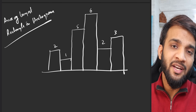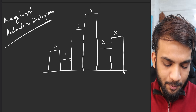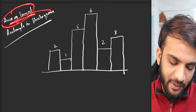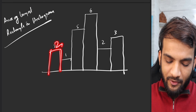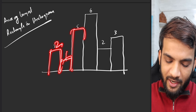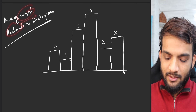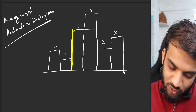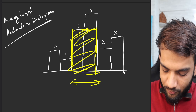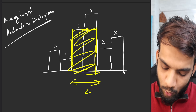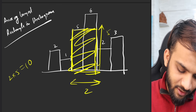There is a prerequisite you need to know before understanding the approach: you must be able to solve the problem 'Area of Largest Rectangle in Histogram.' Given a histogram with heights like 2, 1, 5, 6, 2, 3, you need to find the largest rectangle. The largest rectangle here has width two and height five, making an area of 10.